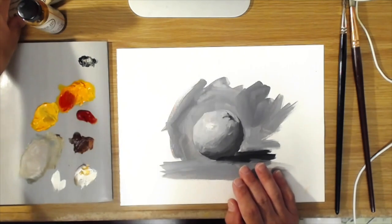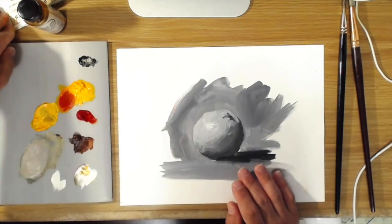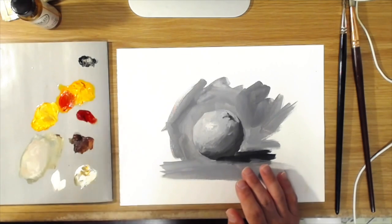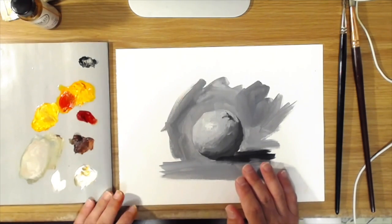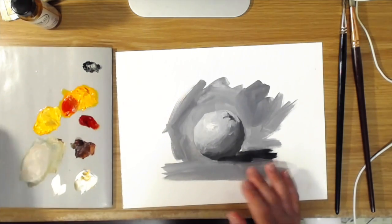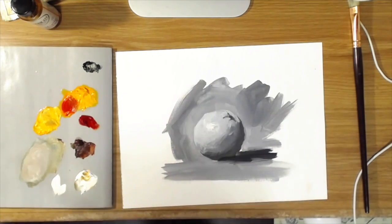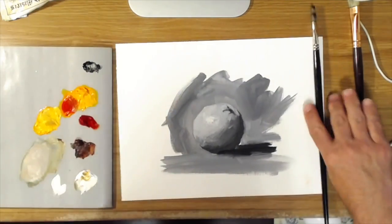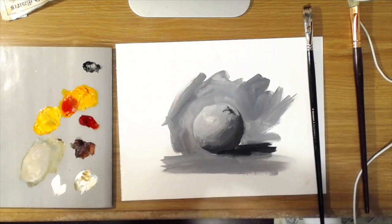Stand oil is a very thick oil that dries very slowly, but will dry to kind of an enamel glass-like finish. So it's really good for glazing. What you do is you start out with this monochromatic underpainting, and then you're going to take the medium.